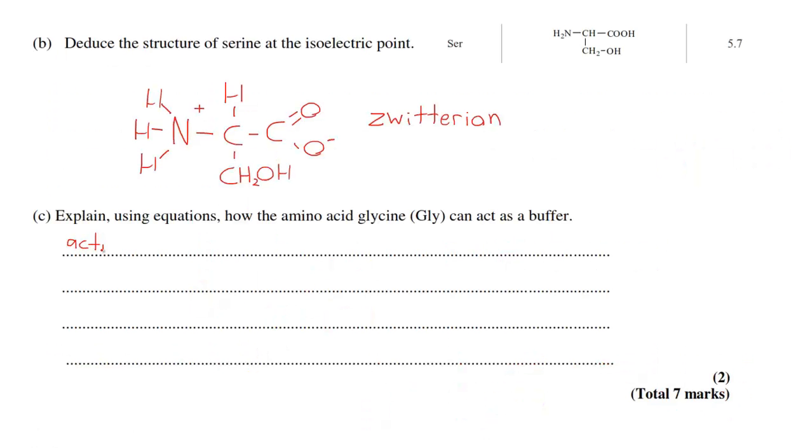Next is writing equations to show how glycine can act as a buffer. Acting as an acid you should draw the zwitterion, the condensed structural form of the zwitterion. Reacting with OH negative, it's going to donate a proton from the NH3+ to give you NH2, CH2, COO- and H2O.